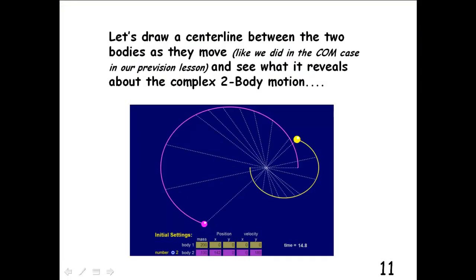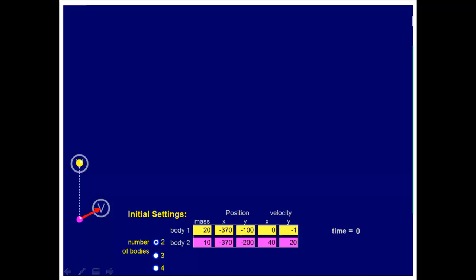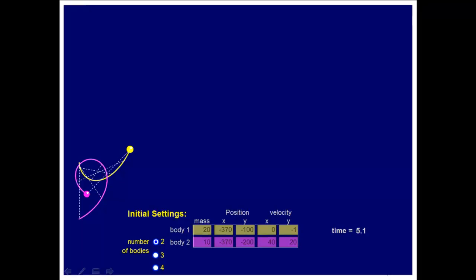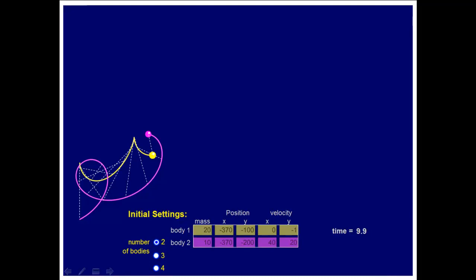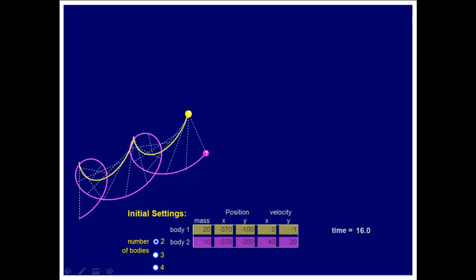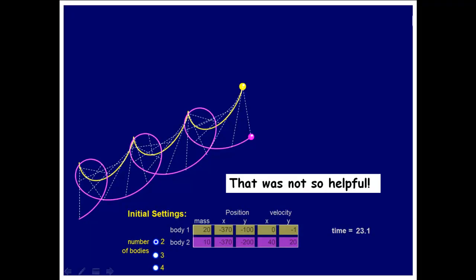Let's draw a center line between the two bodies as they move, like we did in the center of mass case in our previous lesson, and see what it reveals about the complex two-body motion. So we're just going to draw a center line between these two bodies as they move along. Last time we did this, the center line always crossed at that same point, which was the center of mass. But now, it's not so clear what's happening.